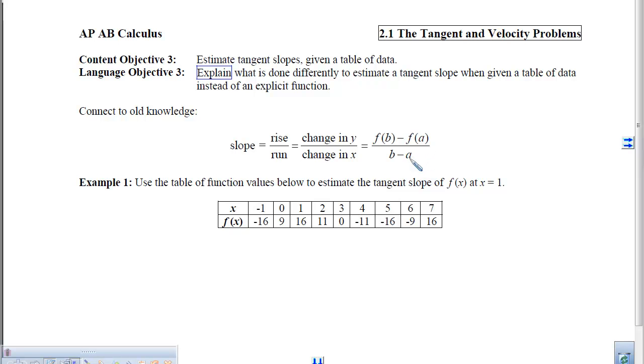because if we want to estimate the tangent slope at a, we simply use the point a, f of a, and then we choose another point b, f of b that is very, very close to a. And we can do this when we have a function, because I can plug whatever I want into the function, provided it is in the domain.